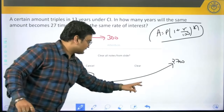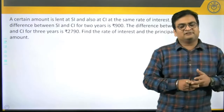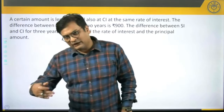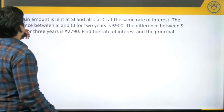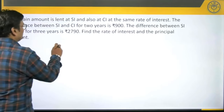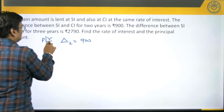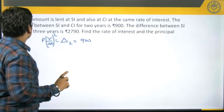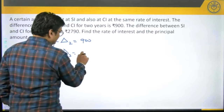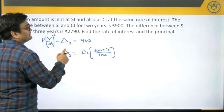Next question — pause the video and try it. A certain amount is lent at both SI and CI at the same rate. The difference between SI and CI for 2 years is 900, so Δ2 = P·(R/100)² = 900. The difference between SI and CI for 3 years is given as Δ3 = 2790. Find the rate of interest and the principal.